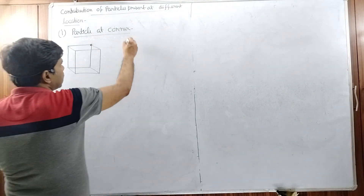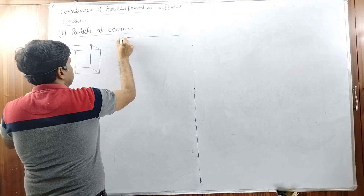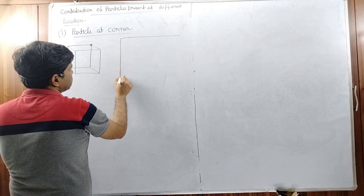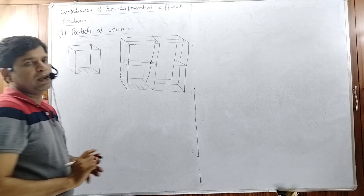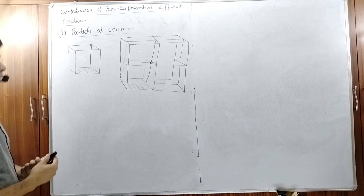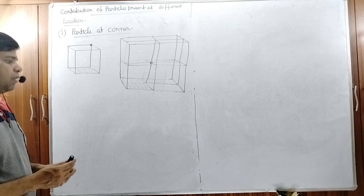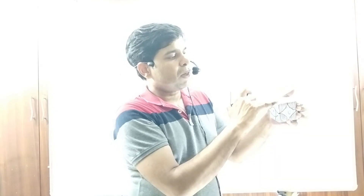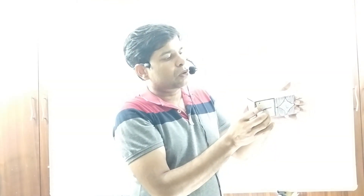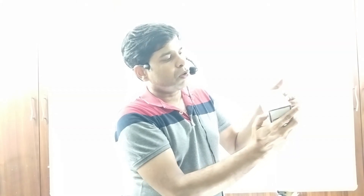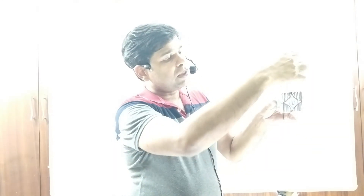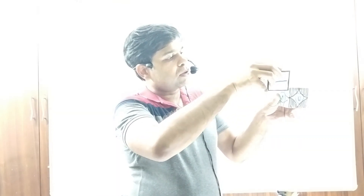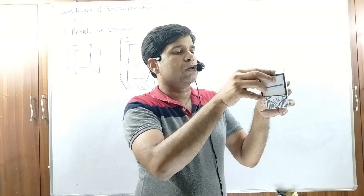When we draw the total crystalline system, we can see that this corner particle is present in eight unit cells — box number one, two, three, and four on one layer, and box number five, six, seven, and eight on the other layer.